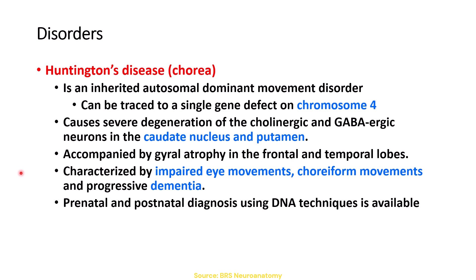You can also see atrophy of the frontal and temporal lobe on MRI. There is a problem with eye movements. Choreiform movements are abnormal irregular movements that can happen in the limbs, joints, and other parts of the body — a moderate range of abnormal movements. Dementia is a chronic mental disorder causing decreased mental function, problems with memory, and disorientation. The disease can be diagnosed with DNA techniques.